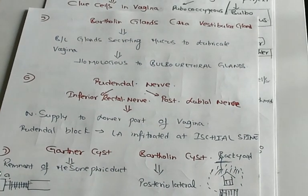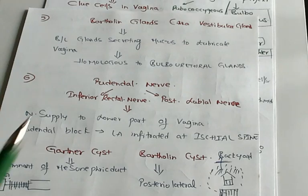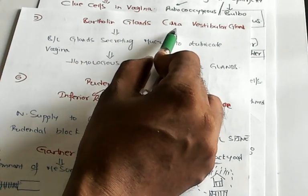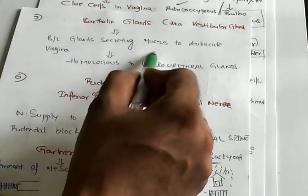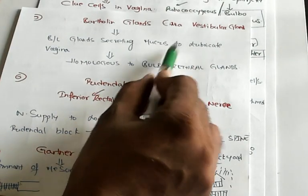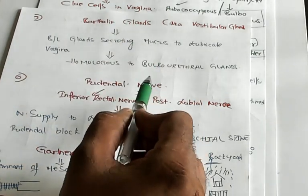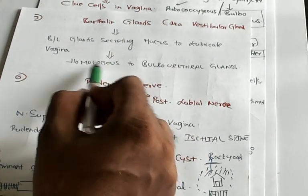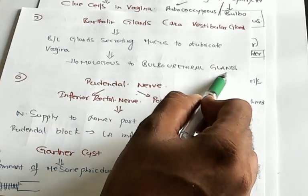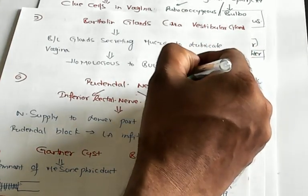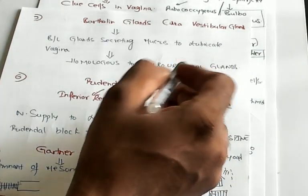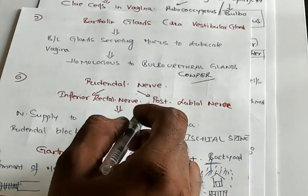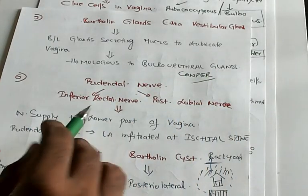Point number five, Bartholin's glands. They are also called vestibular glands. They are the ones which are secreting the mucus, helping the lubrication of the vagina. These are homologous to the bulbourethral glands of Cowper in the male.